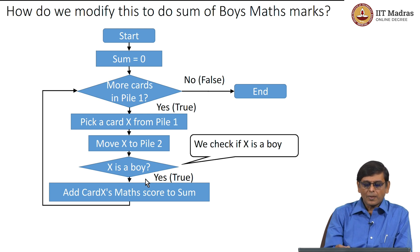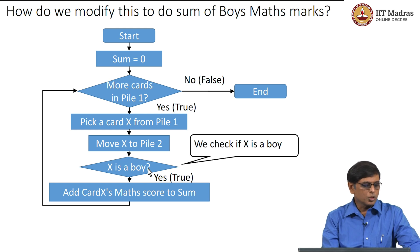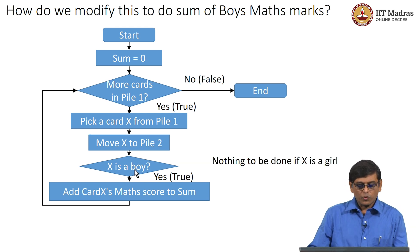If X is a boy then we continue through the process, which basically means that we add the math marks to sum. But on the other hand, if X is not a boy then there is nothing to do really - there is nothing to do.